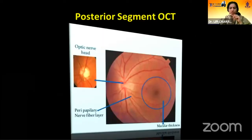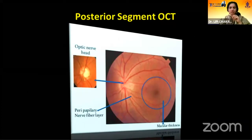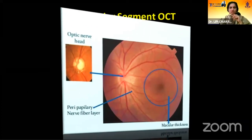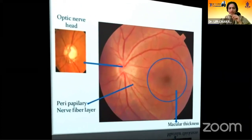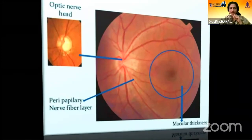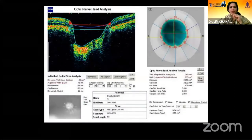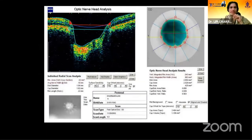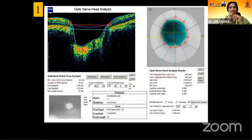Posterior segment OCT is the prime coverage of this presentation. ONH, peripapillary nerve fiber layer or RNFL, and macular thickness are the three components used in glaucoma. We will be dealing with each section. The first component is ONH — optic nerve head analysis.